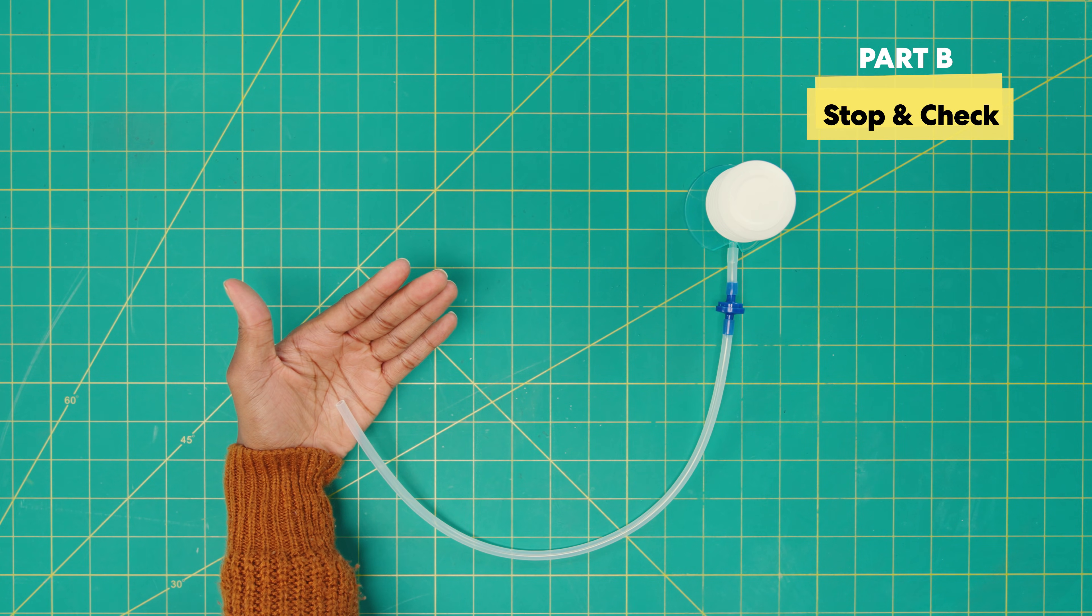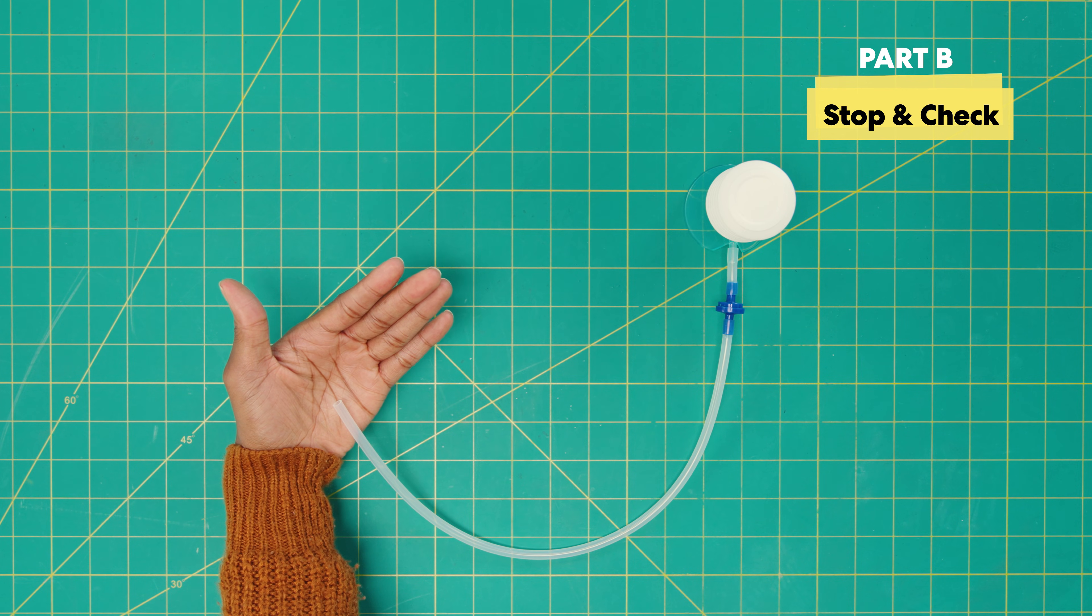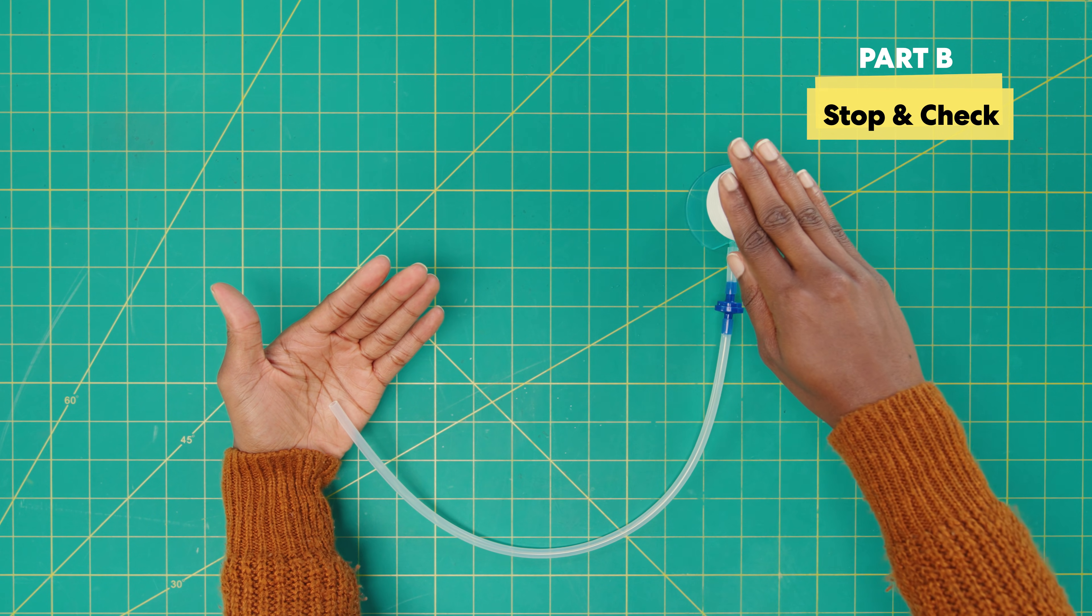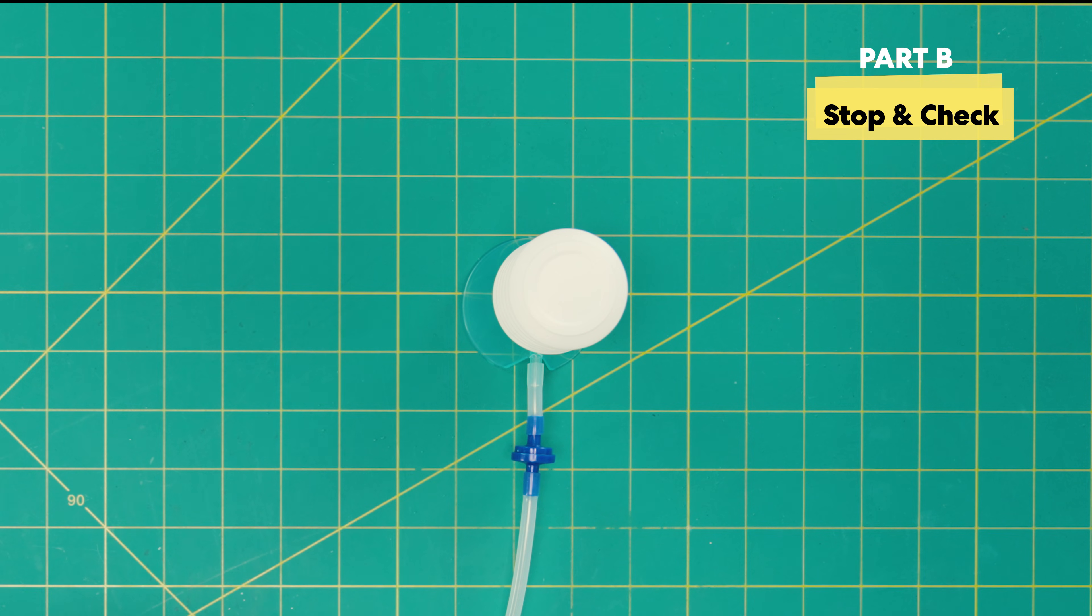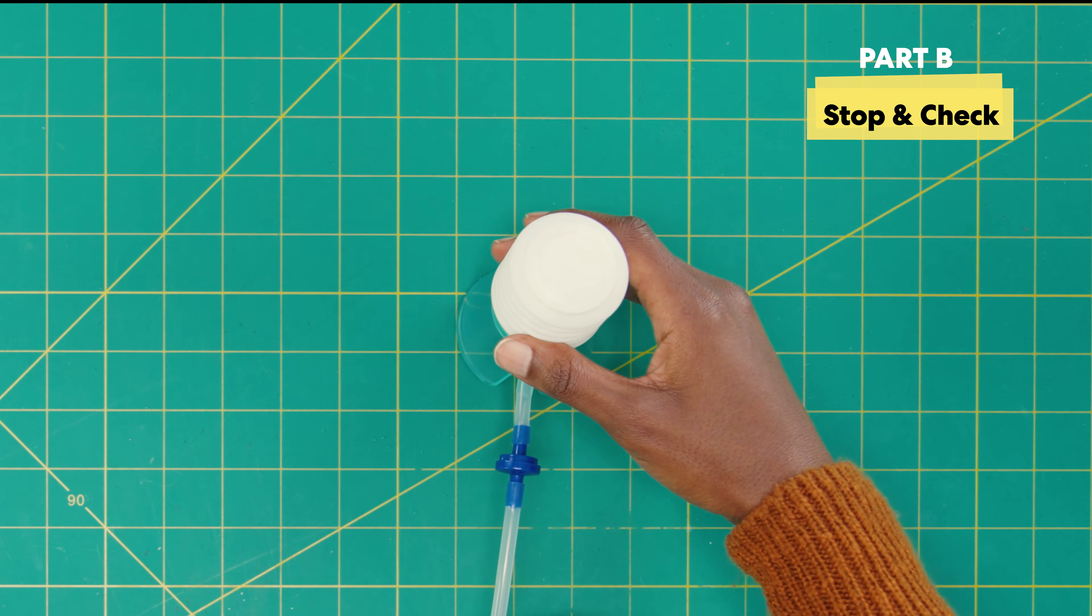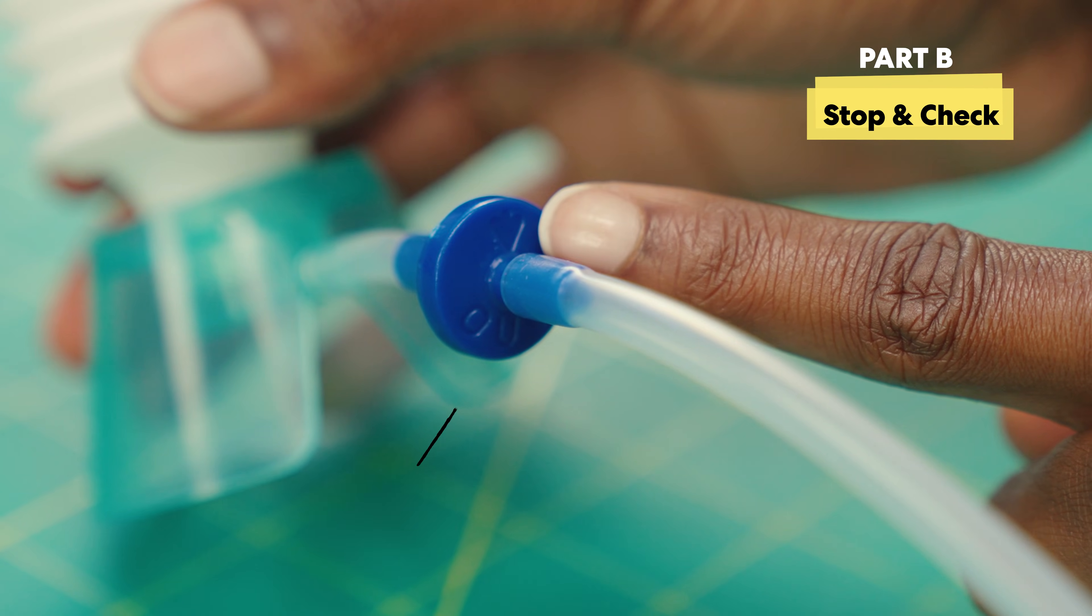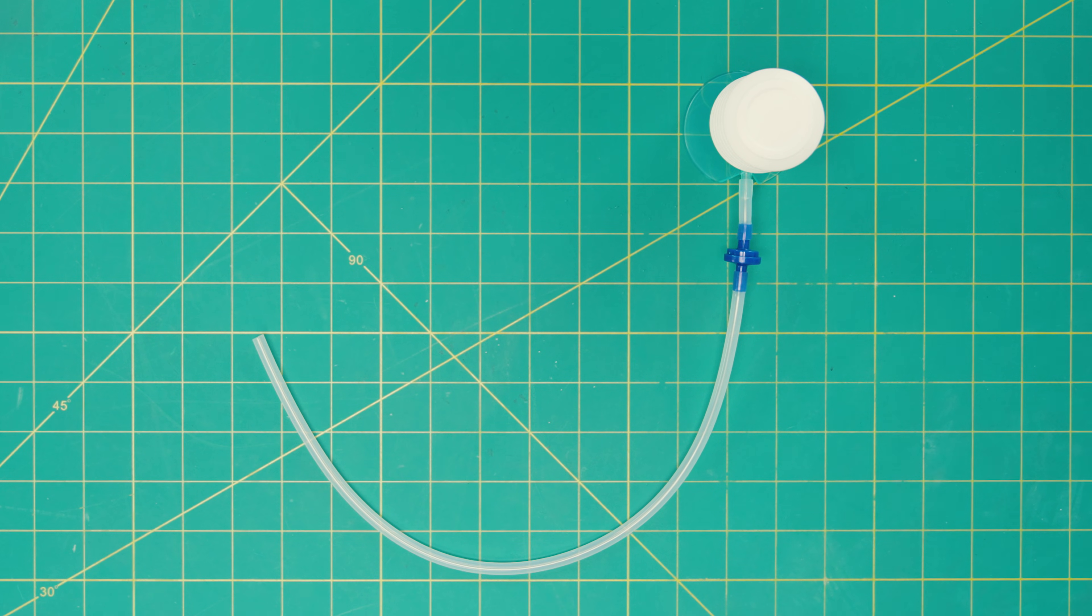All right, time for our first stop and check. Put the end of the long tube against your hand and press the bellows pump. You should feel a light gust of air. If not, check the long tube is connected to the side of the valve with the word out on it. Yay, you built the pump!